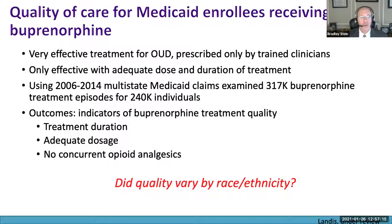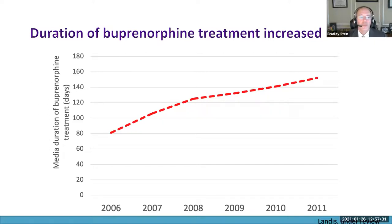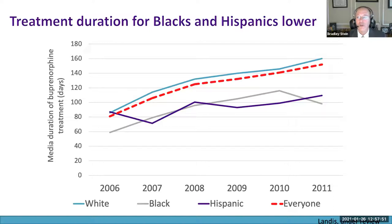We used Medicaid claims data from multiple states from 2006 to 2014, identifying over 300,000 buprenorphine treatment episodes for over 240,000 individuals. We looked at quality indicators: treatment duration (percentage receiving at least 180 days), adequate dosage (at least 8 milligrams, the commonly agreed minimum), and percentage receiving concurrent opioid analgesics — which is generally something you wouldn't want for someone being treated for OUD. Over time, treatment duration went up — exactly what you'd hope to see — but when broken out by race and ethnicity, Black and Hispanic patients had significantly shorter treatment duration than white patients.